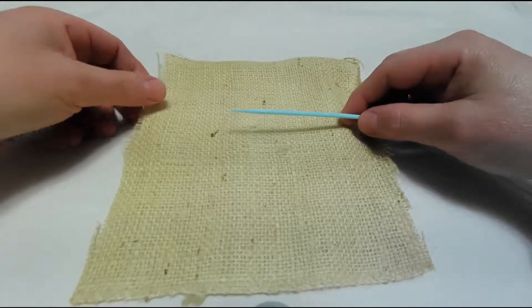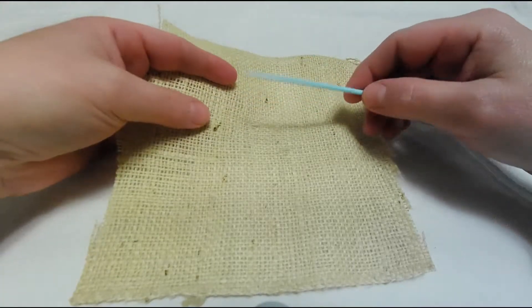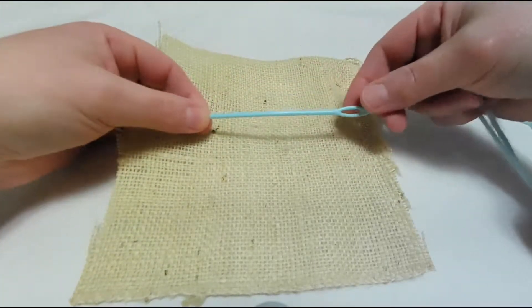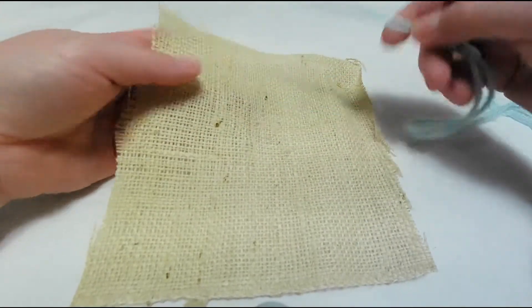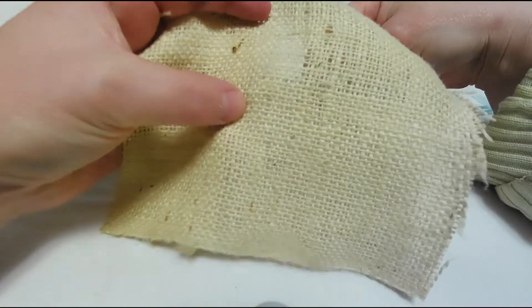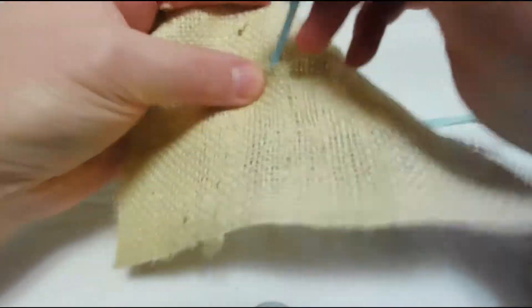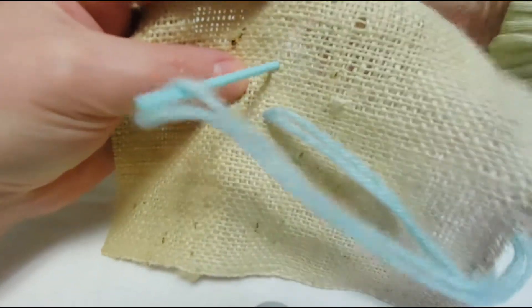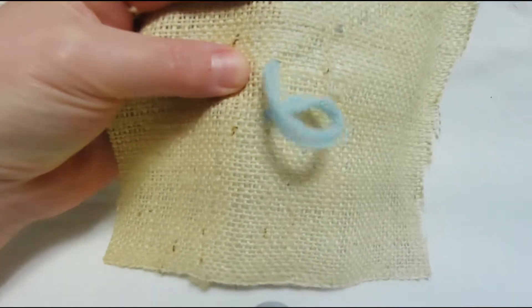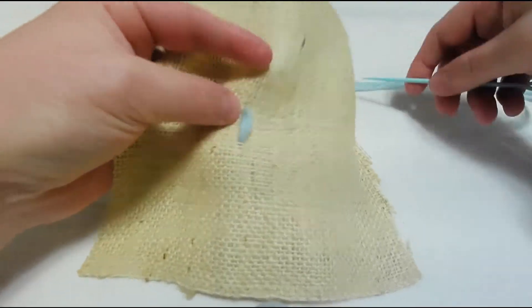Anyway, on to the cable stitch. I have my plastic needle and yarn in burlap so you can really see what's going on. We're going to start by taking a plain straight stitch. There we go, there's a straight stitch.